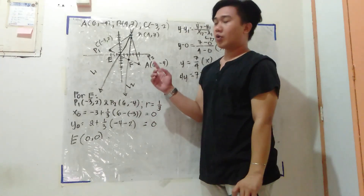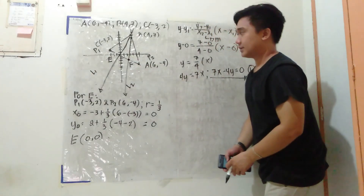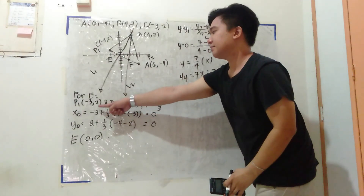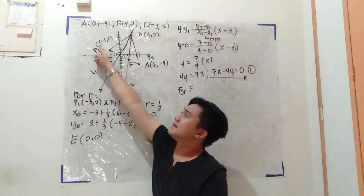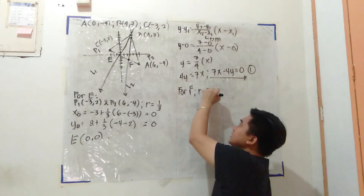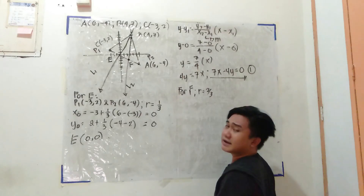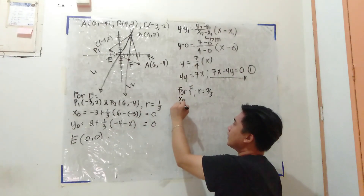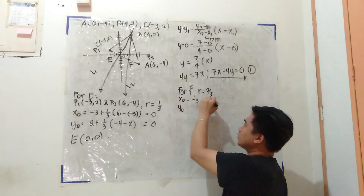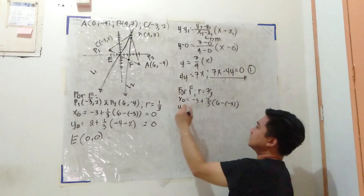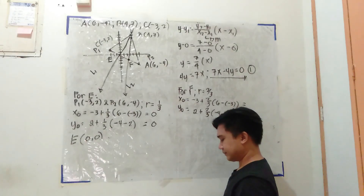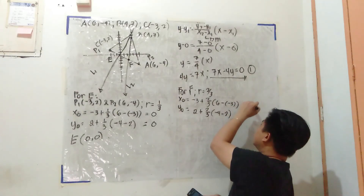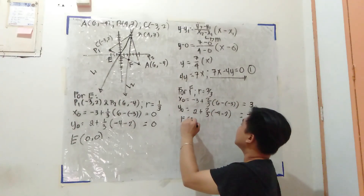Para kay line 2, kailangan ko naman makuha ang coordinates ni point F. For point F, same pa din ang P1 at P2, ang magbabago lang ay ang R, kasi si F is 2 thirds na ang layo mula kay point C. So for F, R is equal to 2 thirds. So XO YO: that is negative 3 plus 2 thirds times (6 minus negative 3), and 2 plus 2 thirds times (negative 4 minus 2). So ang coordinates ni F ay (3, negative 2).